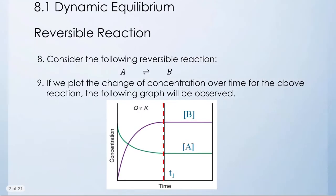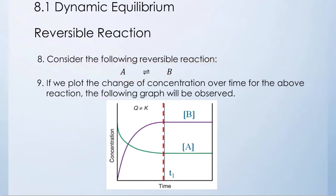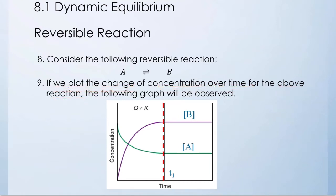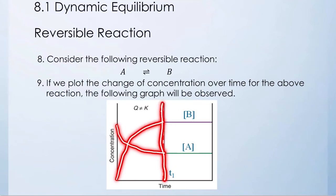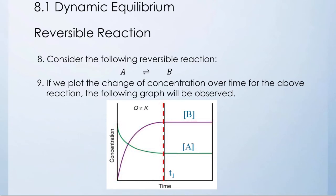Consider we have the following reversible reaction. If we plot the change of concentration over time, we can observe the following graph. Over time, the concentration of A will decrease and the concentration of B will increase. After time T1, we can see that the concentration of A and B will not change. This is what we call equilibrium.